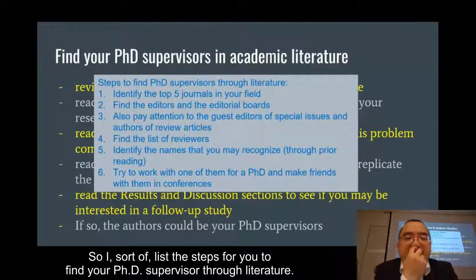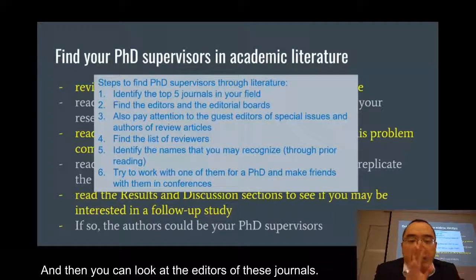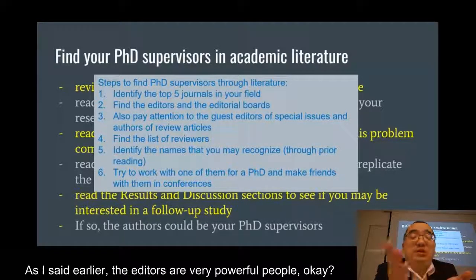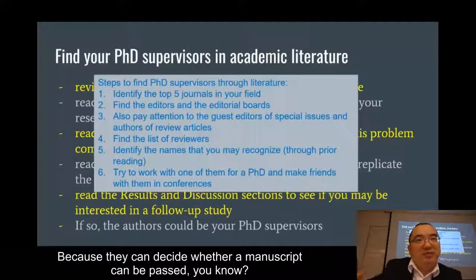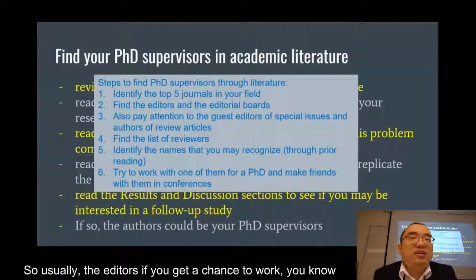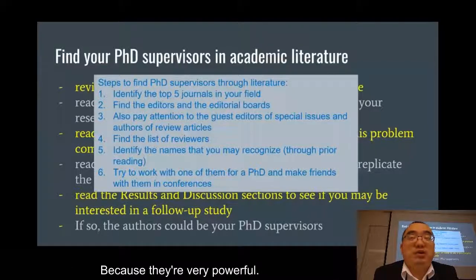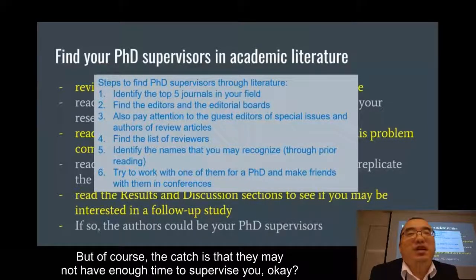Here are the steps to find your PhD supervisor through literature. First, identify the top five journals in your field. Then look at the editors of those journals — editors are very powerful people because they decide whether a manuscript passes the first round of checking and who reviews it. If you could have an editor as your PhD supervisor, you'd be very lucky, though the catch is they may not have enough time to supervise you due to administrative duties. There's also the editorial board — usually senior or active members of research communities — so look at that name list too.